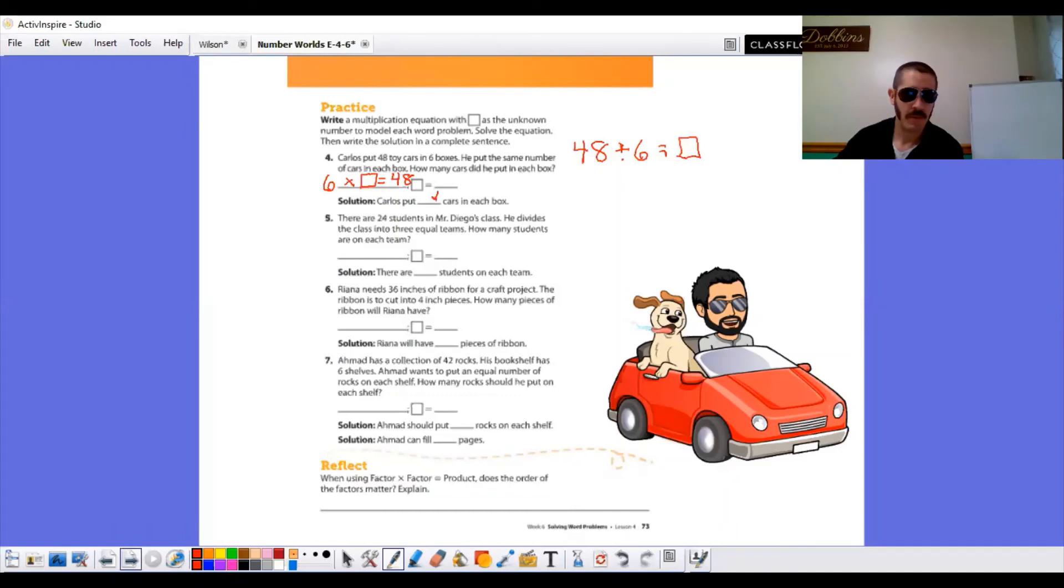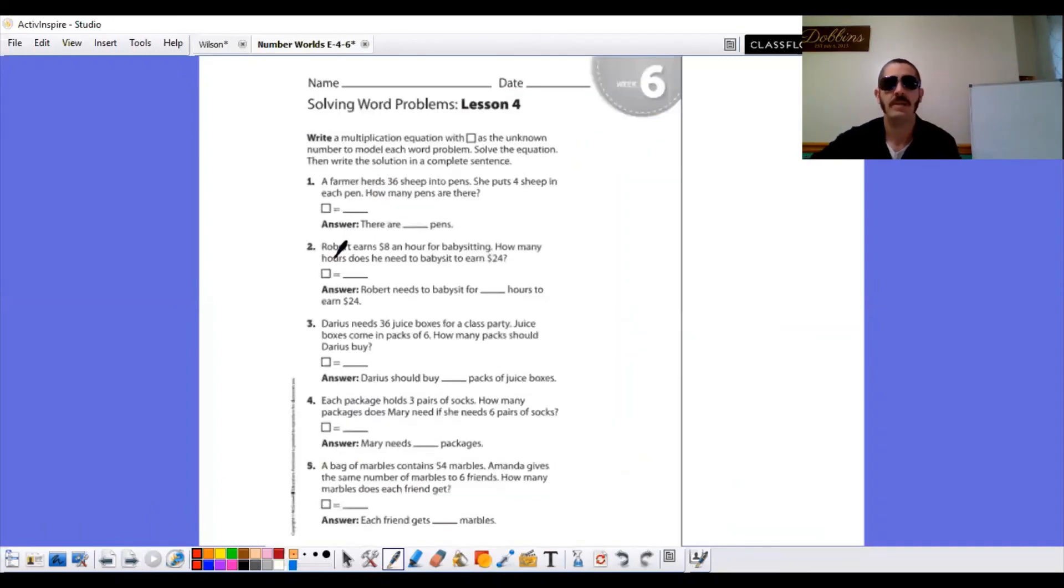When you're done with those problems, you will move on to the practice page. Same as what we were just doing, write a multiplication equation with the square as the unknown number to model each word problem. Solve the equation, then write the solution in a complete sentence. The complete sentence is already written for you. You're just putting the number in there. So in this one, we're trying to find out how many pens, blank pens, whatever that blank is there.